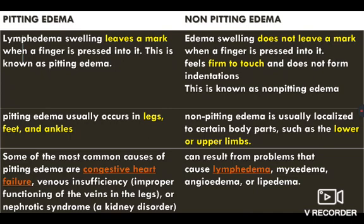Pitting edema usually occurs in legs, feet and ankles — especially the lower limbs. Non-pitting edema is usually localized to certain body parts such as the lower or upper limbs. Common causes of pitting edema are congestive heart failure, venous insufficiency, or nephrotic syndrome. Non-pitting edema results from problems causing lymphedema, myxedema or thyroid dysfunction, angioedema in case of anaphylactic reactions, or lipedema.